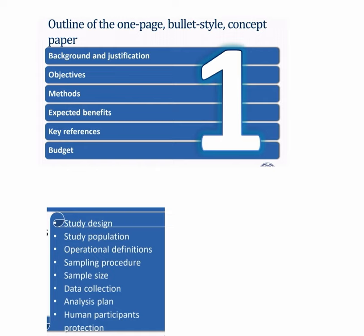What are the components of this one page concept paper? They are: background and justification, objectives, methods, expected benefits, key references, and budget.